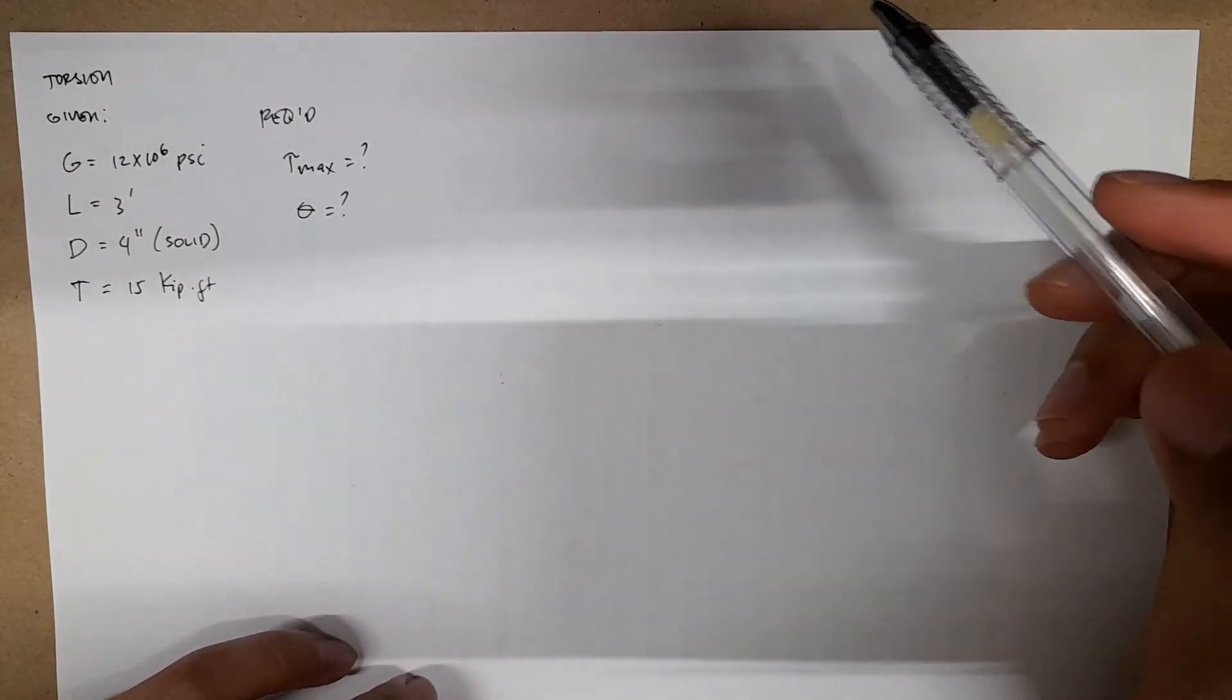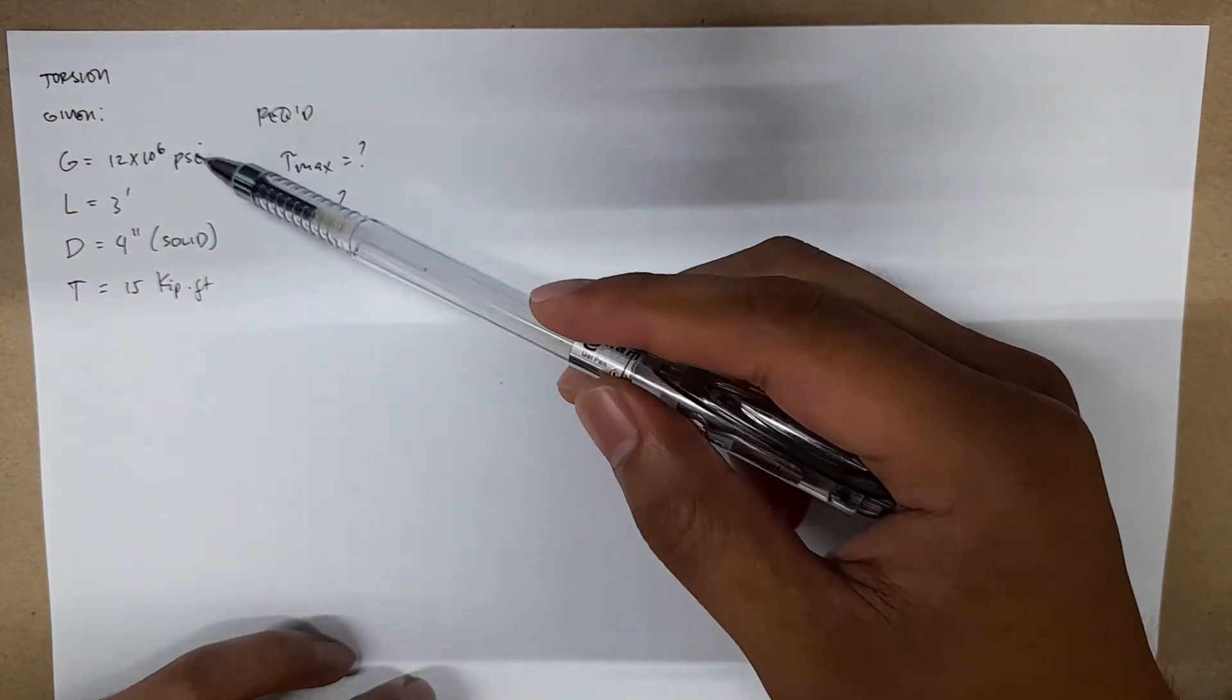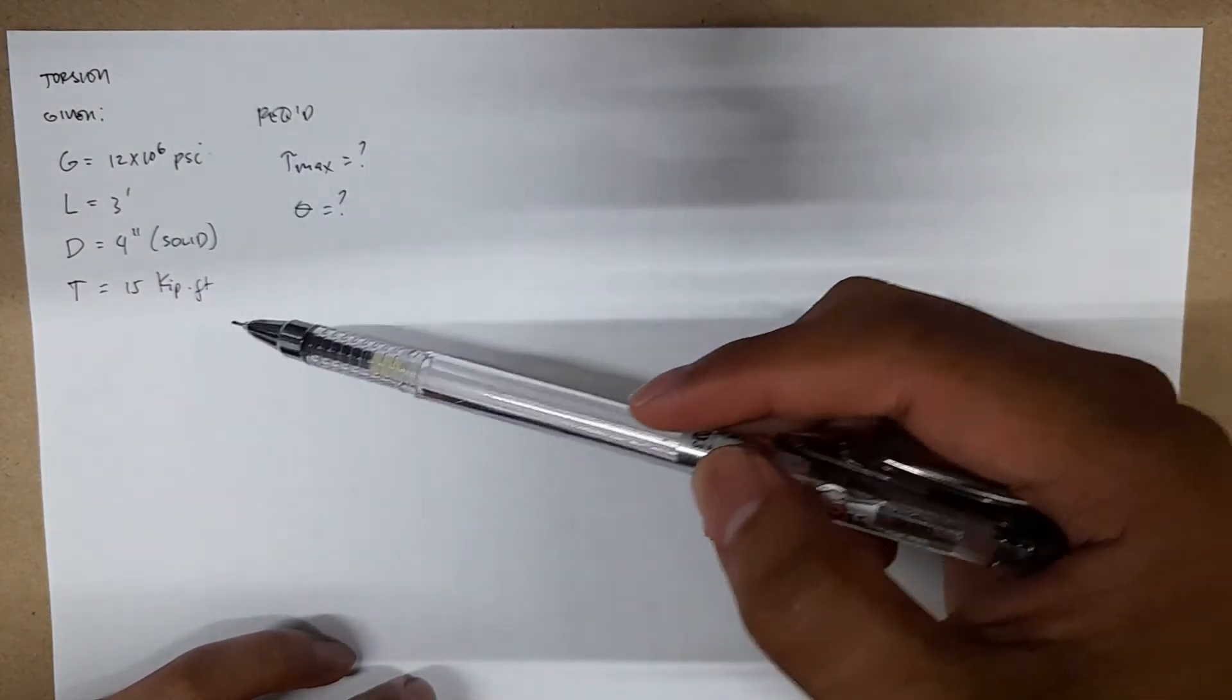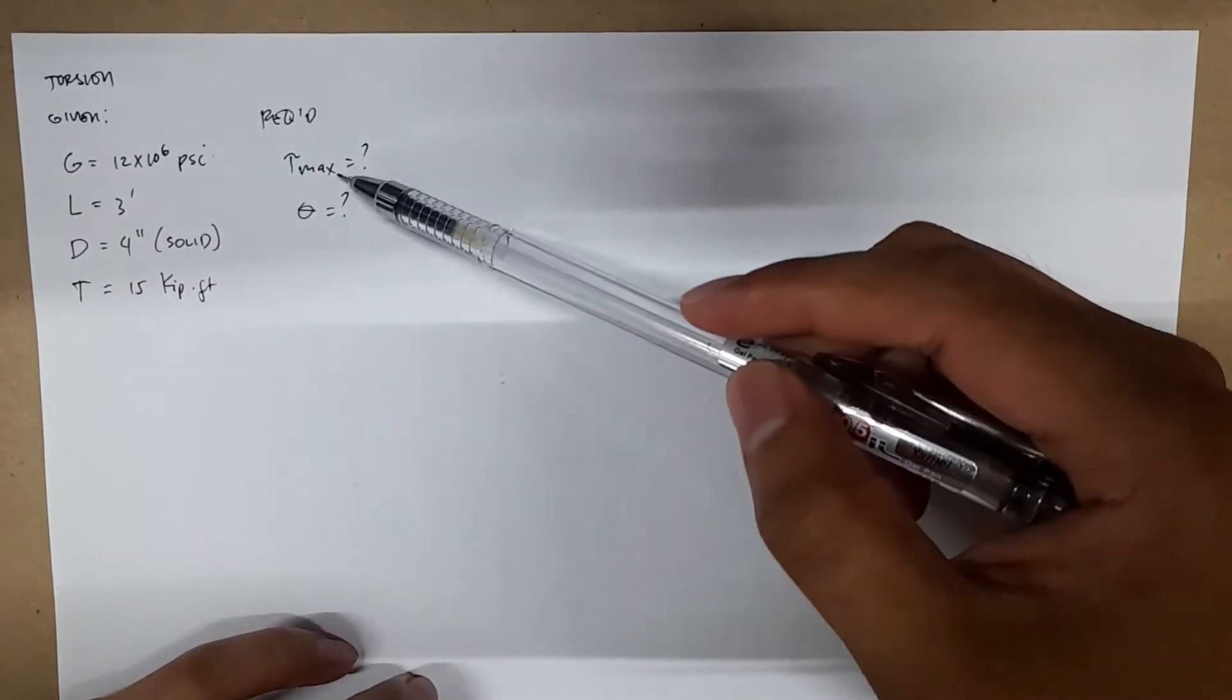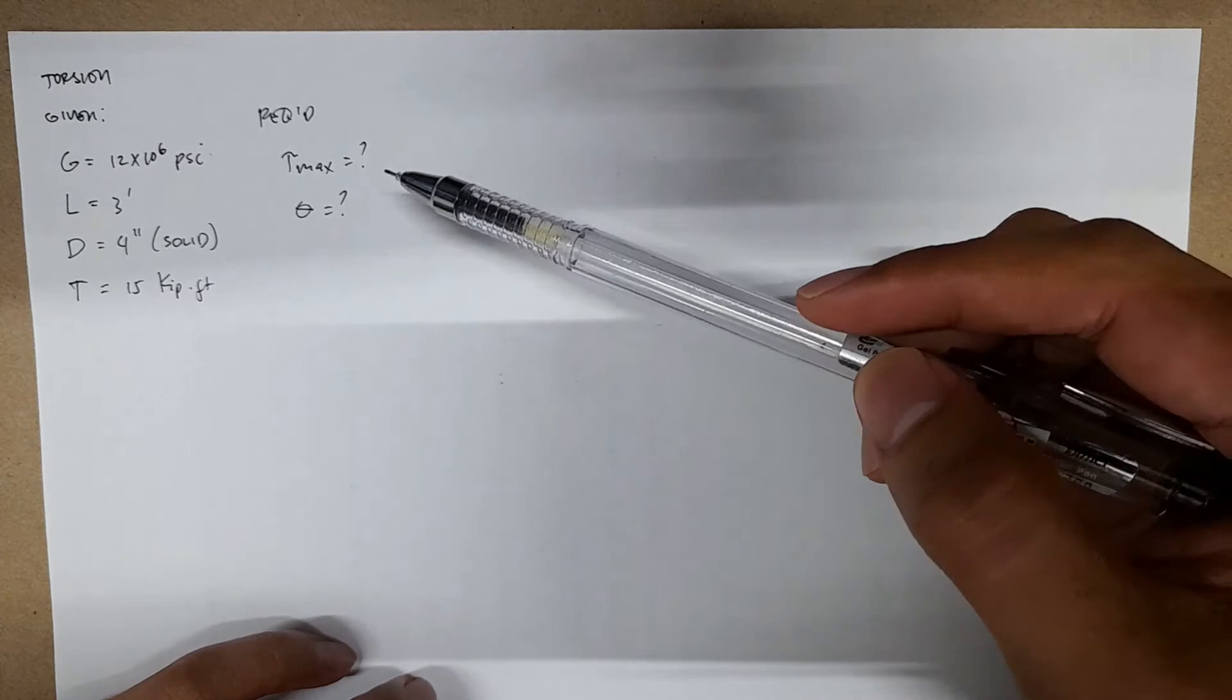We have here a basic example of torsional shearing stress. We're given the following data: diameter and torque, and we're asked to find the maximum torsional shearing stress and the angle of twist.